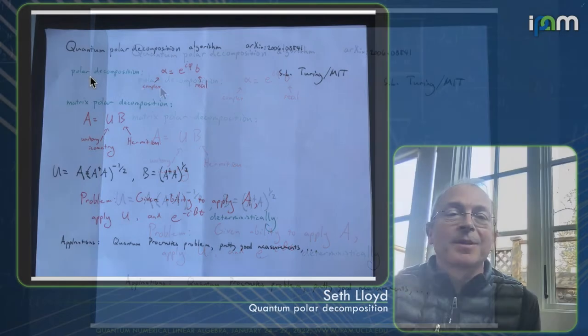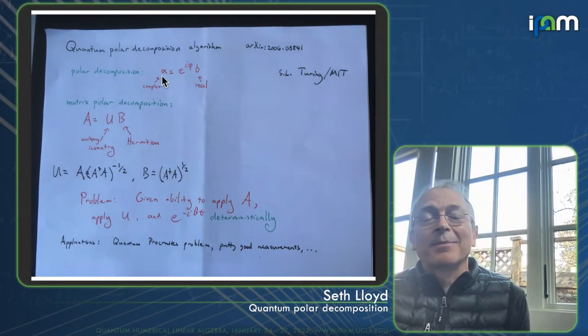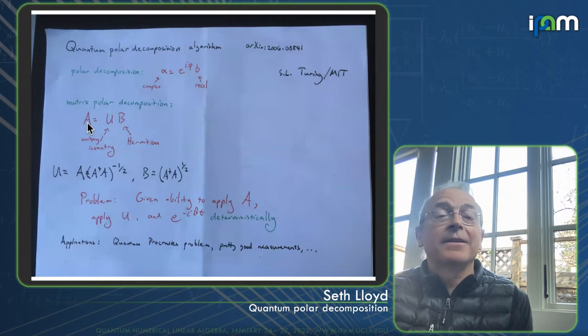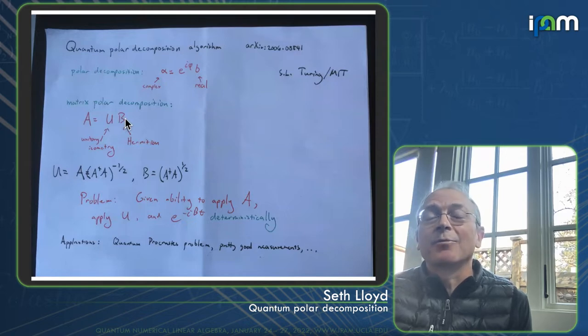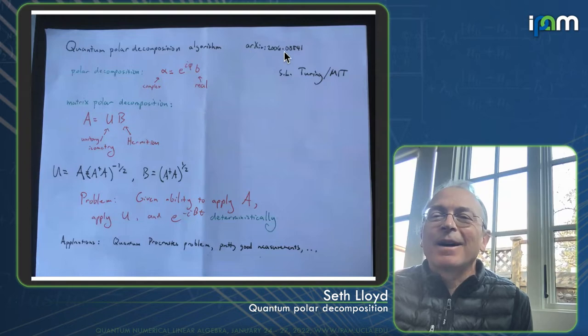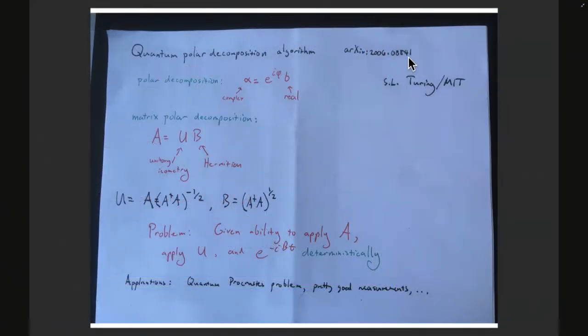So the polar decomposition for a complex number alpha is you have a real number B at a complex phase, and then the matrix polar decomposition for a matrix, which need not actually be square, is that any matrix can be written as a product of a unitary or an isometry and a Hermitian matrix. This is work done with my group and a whole bunch of collaborators. I urge you to go to this paper on the archive and take a look.